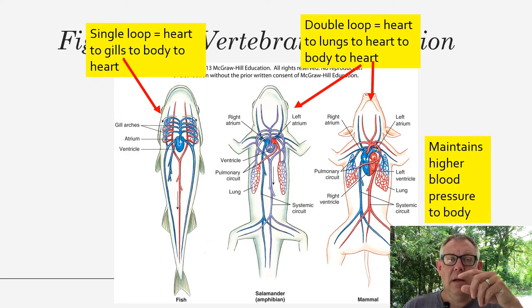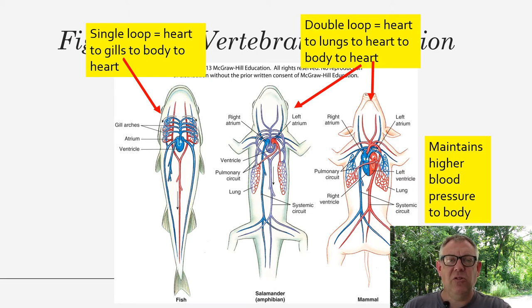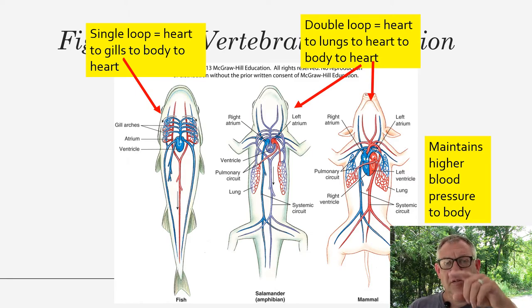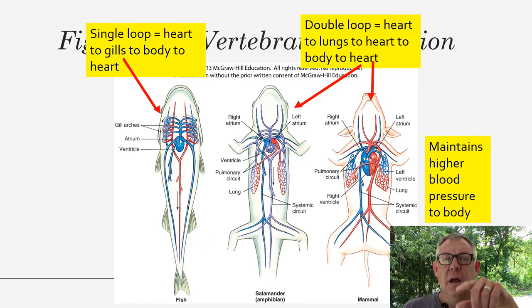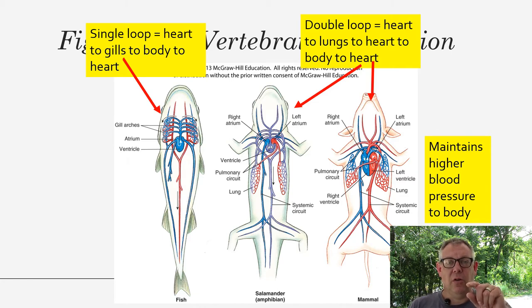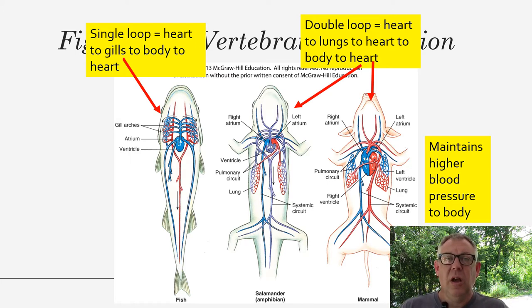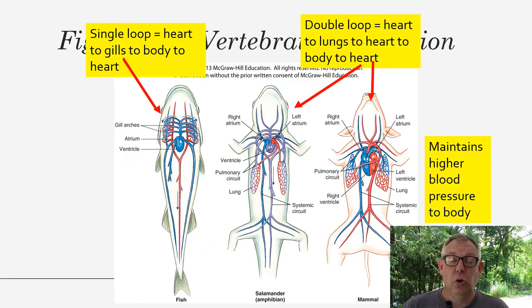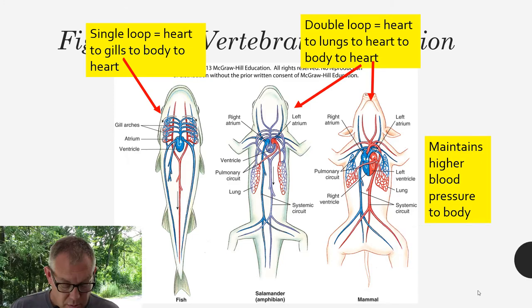In mammals like us, we've got a four-chambered heart with two atria and two ventricles. In fish it's a single-loop system — blood goes from the heart to the gills, to the body, and back to the heart. In organisms with a three- or four-chambered heart, you've got a double-loop system: you pump blood from the heart to the lungs for gas exchange — picking up oxygen and releasing carbon dioxide — then it comes back to the heart and gets pumped a second time to the body. This maintains higher blood pressure to the body.